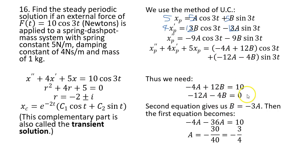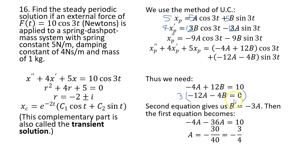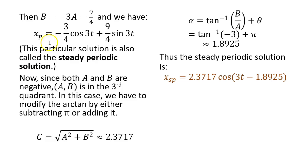Rather than substituting B = -3A directly, multiply the cosine equation by 3 to get -12A + 36B = 30, then add to -12A - 4B = 0, so the A terms cancel quickly. This gives -40A = 10, so A = -1/4. Then B = -3A = 3/4. Wait — actually A = -3/4 and B = 9/4 after careful computation. The particular solution is xp = (-3/4)cos(3t) + (9/4)sin(3t).